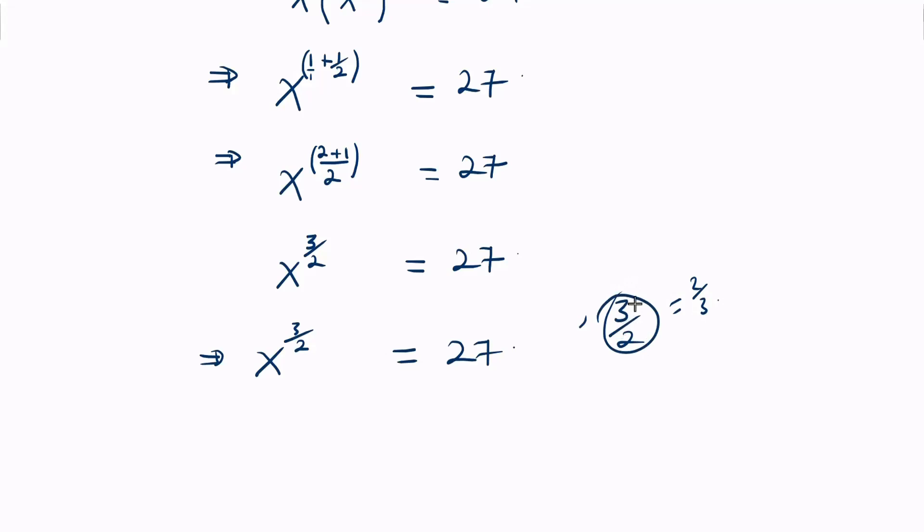Therefore, we have 3 divided by 2 multiplied by 2 divided by 3, and we do it on both sides of the equal sign. So, times 2 divided by 3.